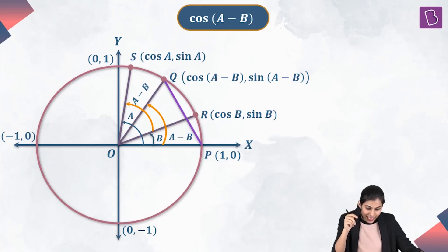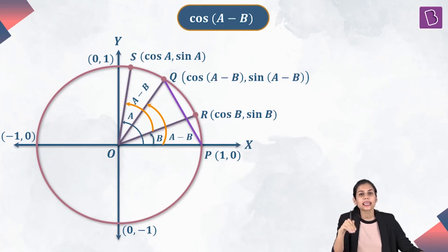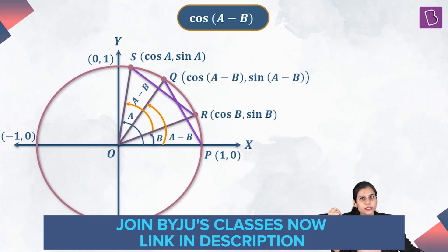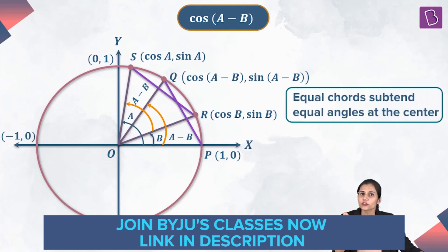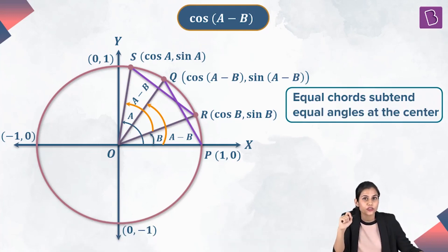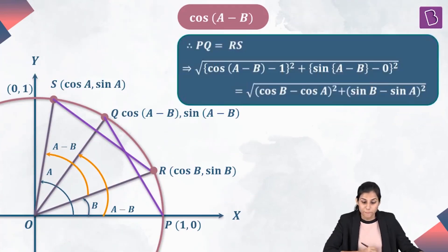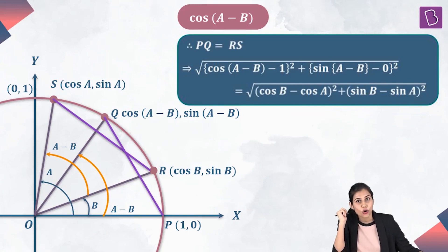Similarly, angle ROS is also an angle subtended at the center of the circle by the RS chord, again of the same equal measure A minus B. But I know as a matter of fact that only equal chords can subtend equal angles at the center of the circle, and hence I obtain that the length of the PQ chord is exactly the same as the length of the RS chord.